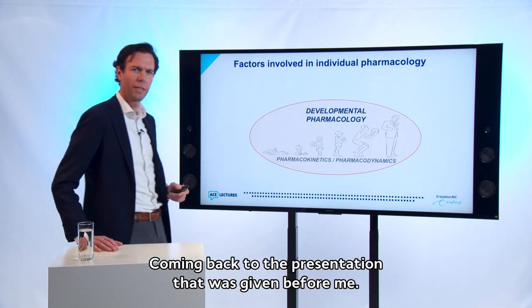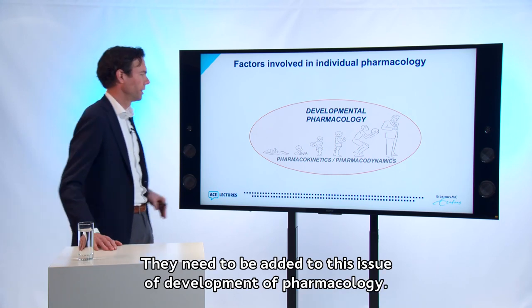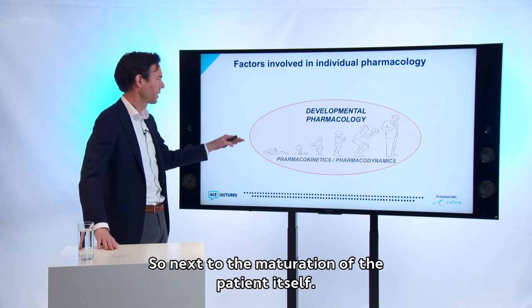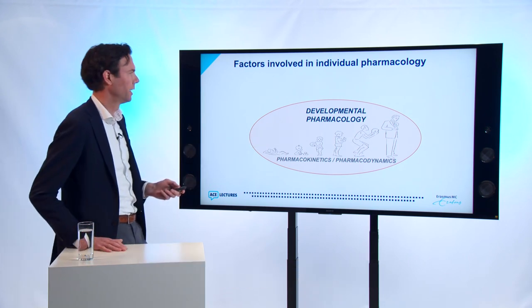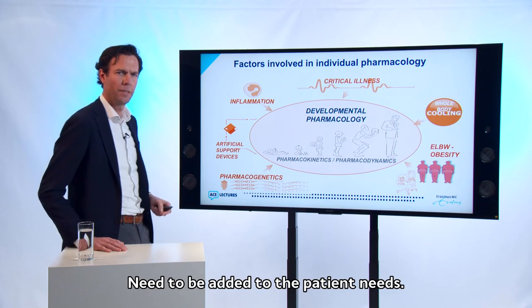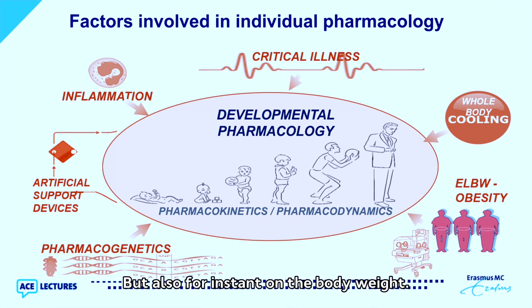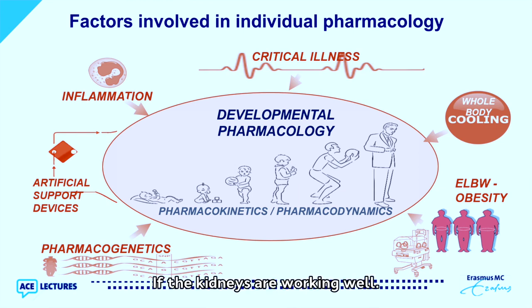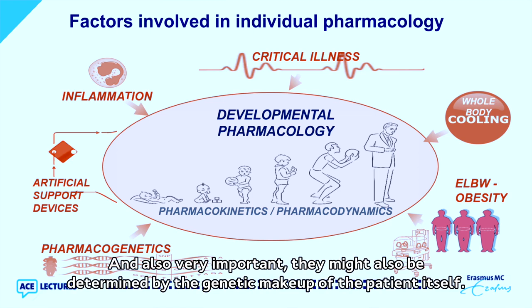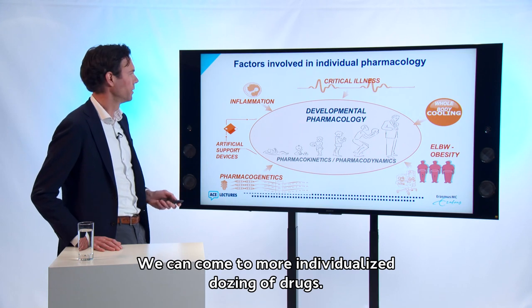Coming back to the previous presentation, all the different factors important in pharmacology need to be added to developmental pharmacology. So next to the maturation of the patient, individual dosing also depends on body weight, whether the patient is critically ill, whether there is severe inflammation, whether the kidneys are working well, and also the genetic makeup of the patient. Taking all these issues together, we can come to more individualized dosing of drugs.